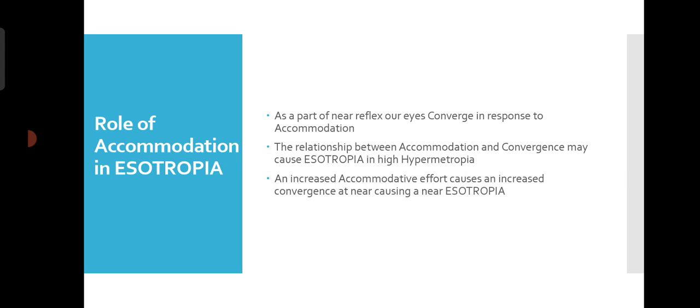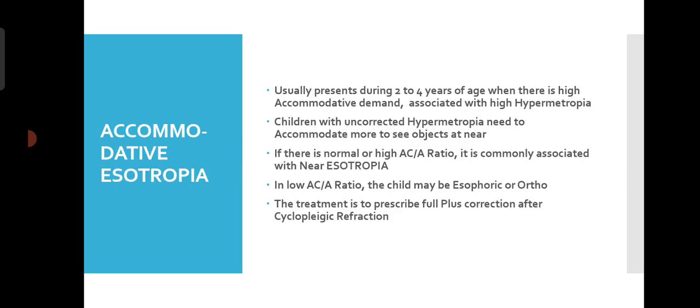If there is increased accommodation at near, the child needs to perform increased convergence as well, which may give rise to near Esotropia — that means Esotropia which is only present at near distance and not at distance. Accommodative Esotropia usually presents between 2 to 4 years of age when there is high accommodative demand associated with high hypermetropia. Children with under-corrected hypermetropia need to accommodate more to see objects at near, and that is the reason Accommodative Esotropia develops.